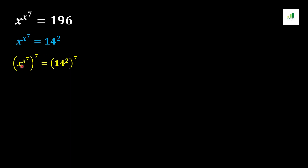We get x to the power 7, overall to the power 7, and 14 squared overall to the power 7. From the basic rule of algebra, if a value has more than one power, the powers can be rearranged. So we arrange the powers as x to the power 7, overall to the power x to the power 7. This power of 2 multiplies with 7, because if a value has a power of a power, both powers multiply together. So we multiply 2 with 7 and get 14 to the power 14.